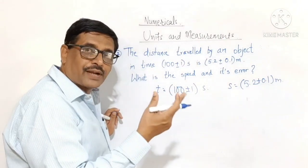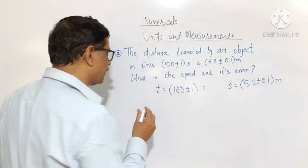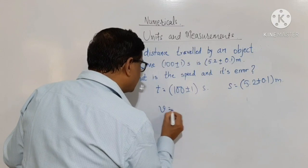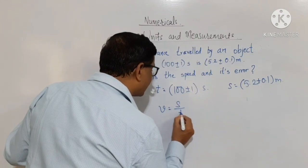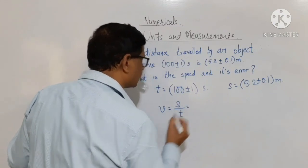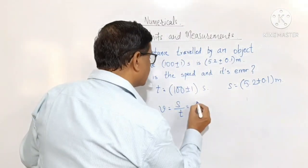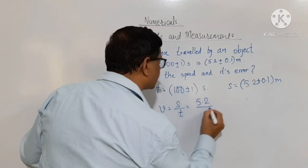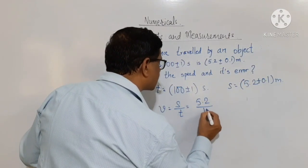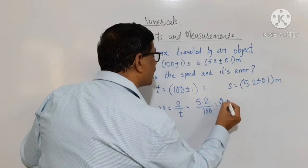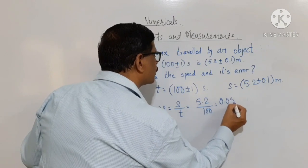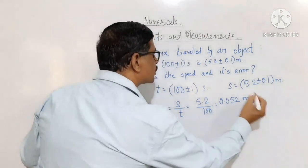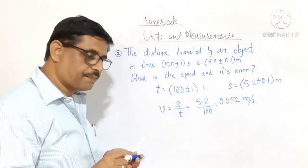First, we will find out the speed. We know that speed is distance covered divided by time taken. The distance covered is 5.2 meter and the time taken is 100. Therefore, it should be equal to 0.052 meter per second. This is the speed.